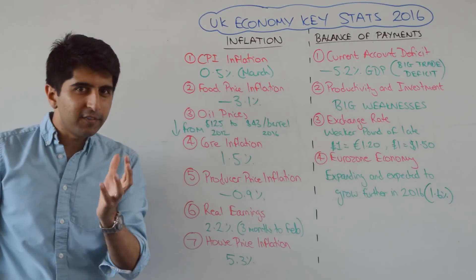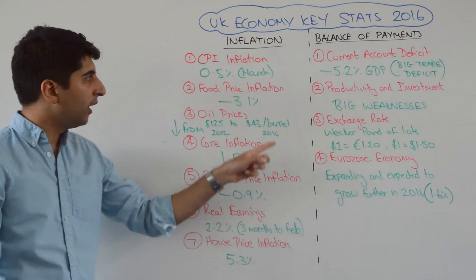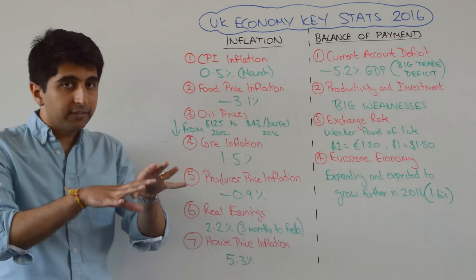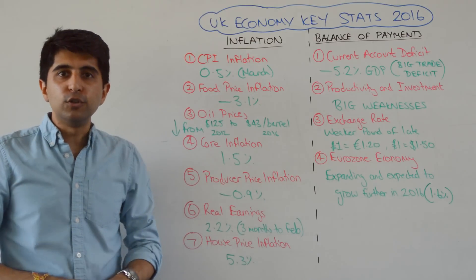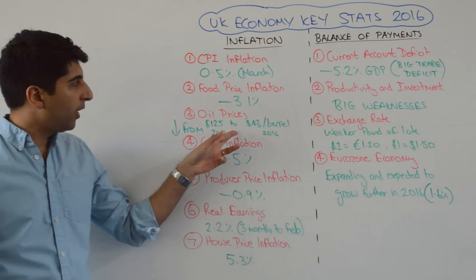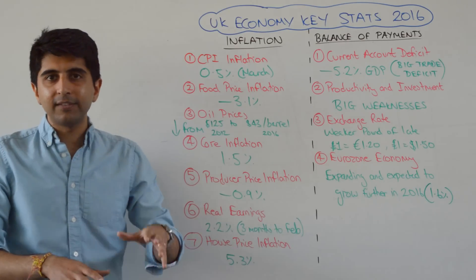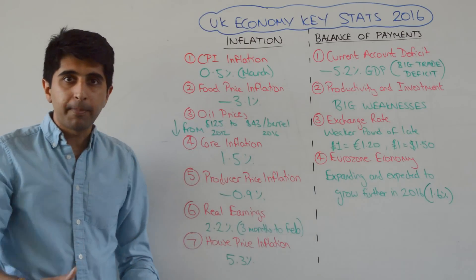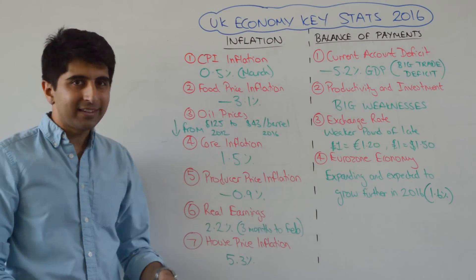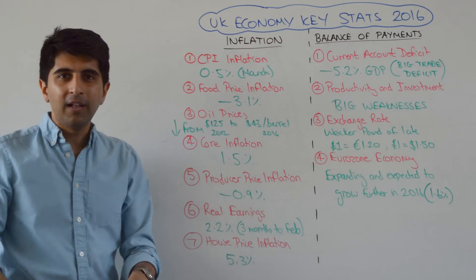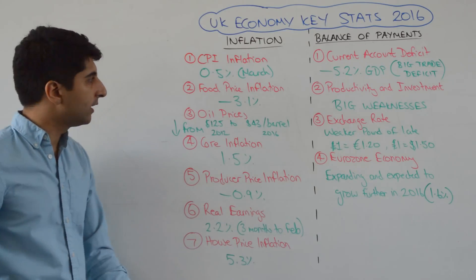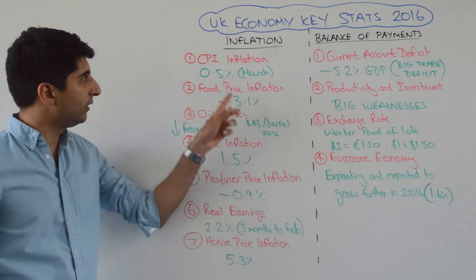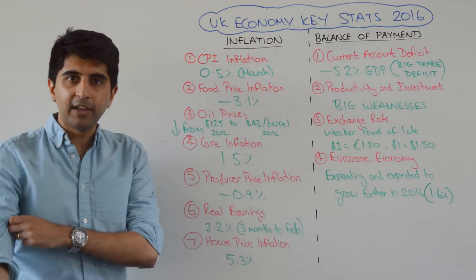Why is the inflation rate so low? It's been driven by three major factors. Food prices are in deflation right now, and that's heavily reducing the overall inflation figure. Oil prices are also very low, leading to lower fuel prices at the pumps. Oil prices were $125 per barrel in 2012; now they stand at only $43 per barrel. Gas and electricity prices are falling as well, all of which is leading to a very low CPI inflation figure.